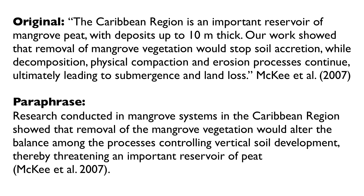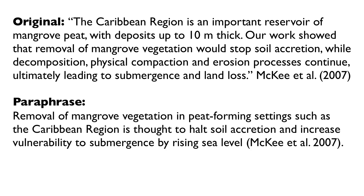Here is one way to paraphrase this information: Research conducted in mangrove systems in the Caribbean region showed that removal of the mangrove vegetation would alter the balance among the processes controlling vertical soil development, thereby threatening an important reservoir of peat. Here's another way: Removal of mangrove vegetation in peat-forming settings, such as the Caribbean region, is thought to halt soil accretion and increase vulnerability to submergence by rising sea level. McKee et al., 2007.